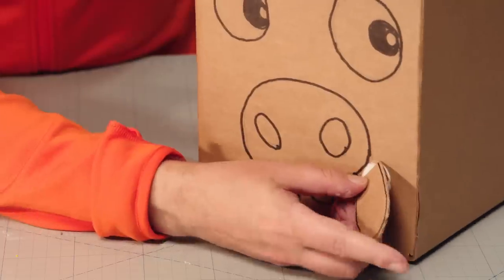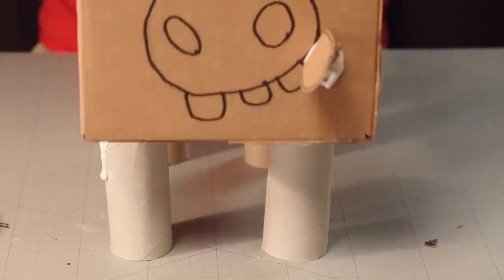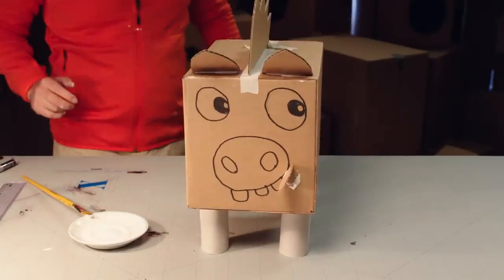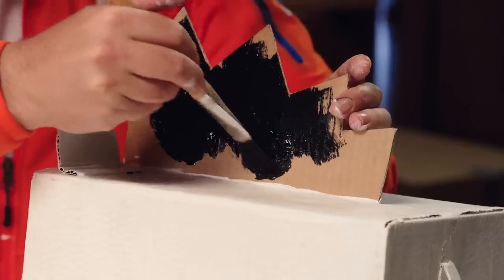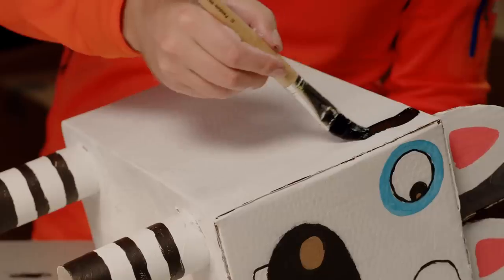Ears, mane, tongue, tail, and legs. Then, paint the white base color. Add some other colors. And finally, paint some stripes.